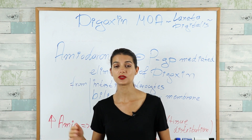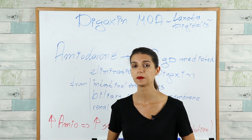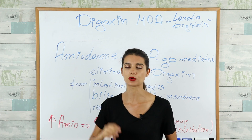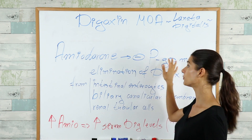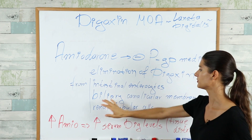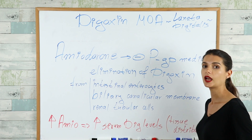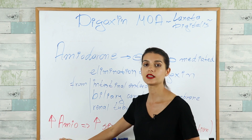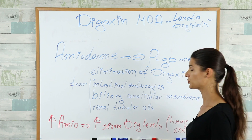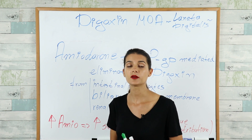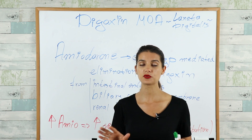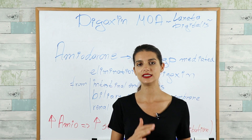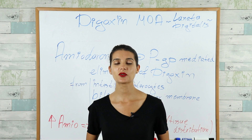Digoxin drug-drug interactions are very heavily tested. If you use amiodarone and digoxin together to treat arrhythmia, you can end up with increased digoxin levels. Amiodarone blocks P-glycoprotein-mediated elimination of digoxin from intestinal enterocytes, biliary canalicular membranes, and renal tubular cells, and also alters the tissue distribution of digoxin. Quinidine, verapamil, and propafenone will also increase digoxin levels. Lastly, the antidote for digoxin toxicity is DigFab — an antibody against digoxin. This concludes our digoxin video.